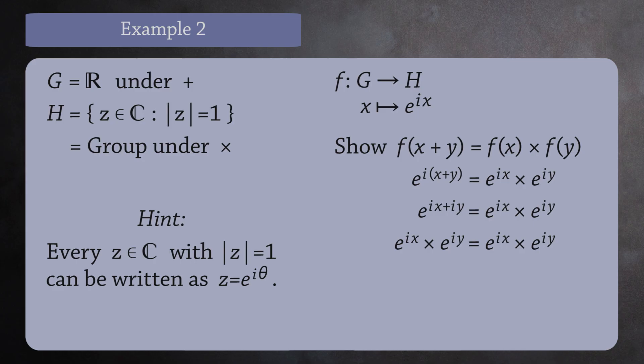By the way, I'd like to point out that f(0) equals f(2π). Both are equal to 1. In fact, f of any multiple of 2π is 1. So this is not a 1 to 1 function. Homomorphisms do not have to be 1 to 1.